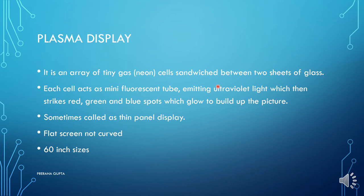It is an array of tiny gas neon cells sandwiched between two sheets of glass. In two sheets of glass, we keep an array of tiny gas cells. Normally a neon gas cell will come. Each cell acts as a mini fluorescent tube, which then strikes red, green, and blue spots which glow to build up a picture.